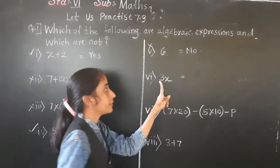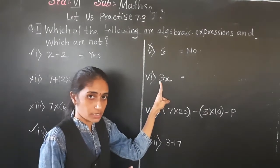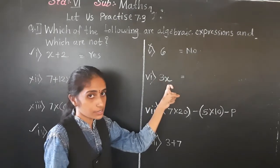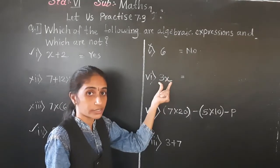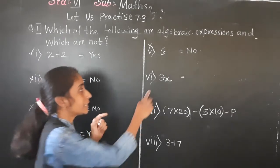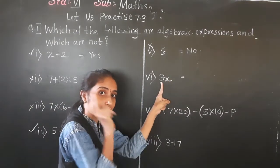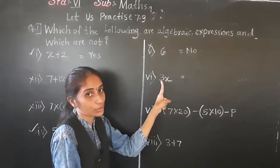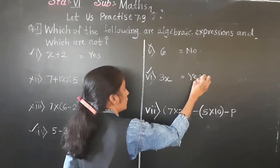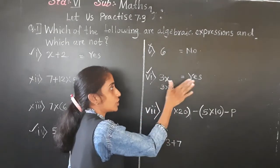The sixth example: 3x. Here 3 is constant and x is variable. Even though there is no visible sign between them, no sign between a number and a variable means a multiplication sign. So 3x means 3 multiplied by x — this is an algebraic expression.